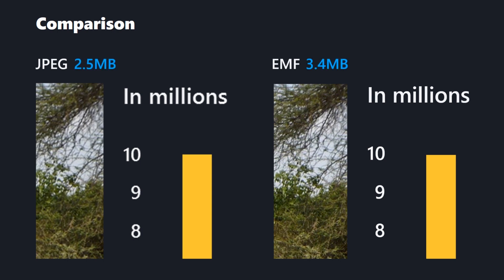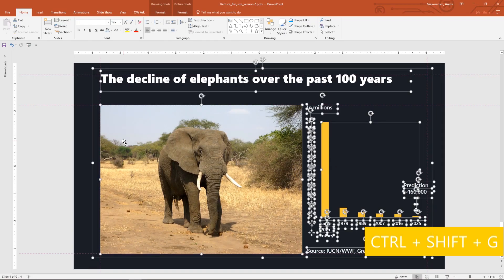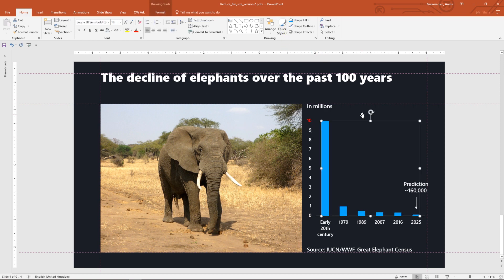Why? The EMF format can include both vector graphics and raster data. As you know, the JPEG is a lossy format and the image has been compressed. Let's ungroup the EMF — press Shift-Ctrl-G twice. And look, you're still able to modify the photo, text, and you can modify the shapes.